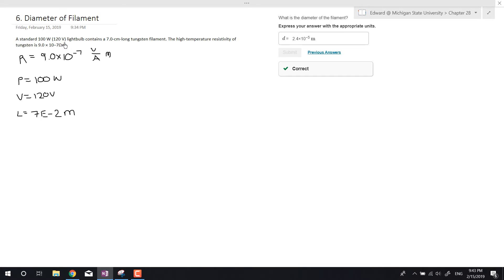We have a standard 100 watt, which is a 120 volt light bulb, contains a 7 centimeter long tungsten filament. The high temperature resistivity of tungsten is 9.0 times 10 to the -7 ohm times meter. They already give us the resistance, the resistivity of tungsten, so that's just gonna be the resistivity. That's not R, that's rho.